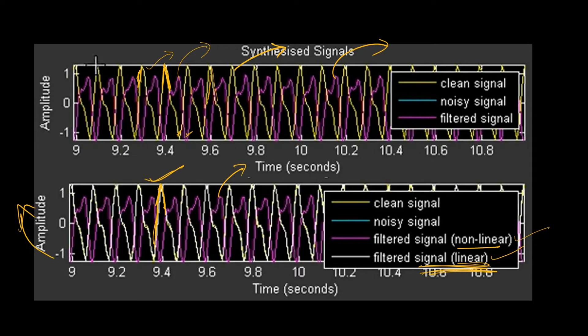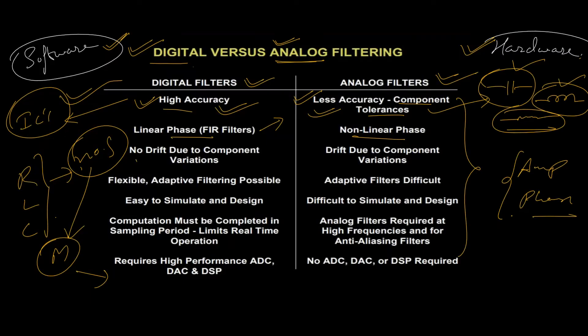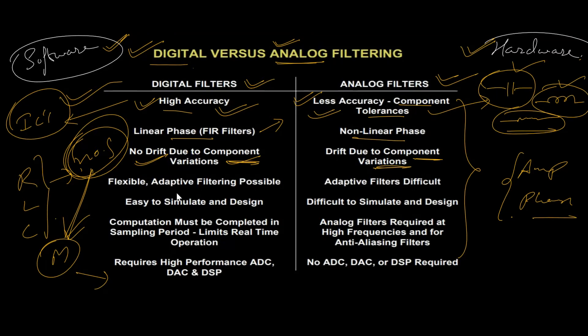The next advantage is no drift due to component variation. Since we don't have any physical components, the values of resistance, capacitance, and inductance are stored in the form of numbers in memory as coefficients. In analog filters, component parameters may vary as per climatic conditions, environmental conditions, and several other conditions that can affect the filter characteristics.